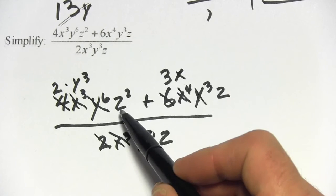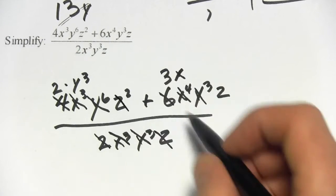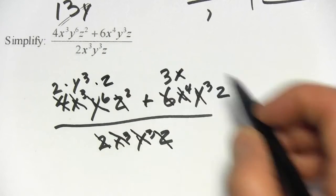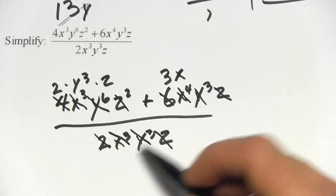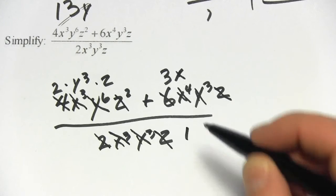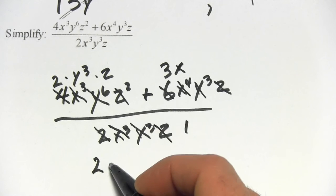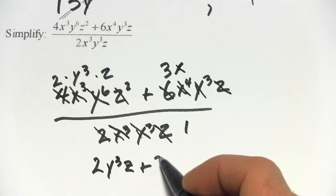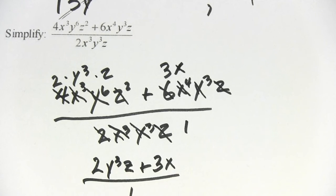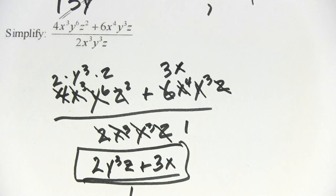All right, now let's go to our z terms. We have a z squared here, a z and we have a z on the bottom. So if we cancel here, that leaves one z on top and we cancel here, that leaves no z's on top. So we've canceled everything on the bottom, which basically means the bottom becomes 1. So if we wanted to rewrite this, we have 2 times y to the 3rd times z plus 3x over 1 or just that as our answer. So that is a little bit of work with canceling.